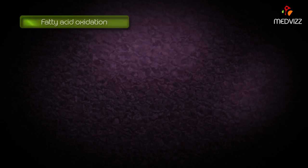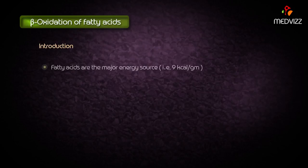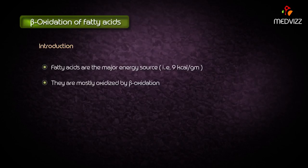Fatty acid oxidation is also called as beta oxidation of fatty acids. The fatty acids are the major energy source that gives approximately 9 kilocalories per gram, and the fatty acids in the body are mostly oxidized by beta oxidation.